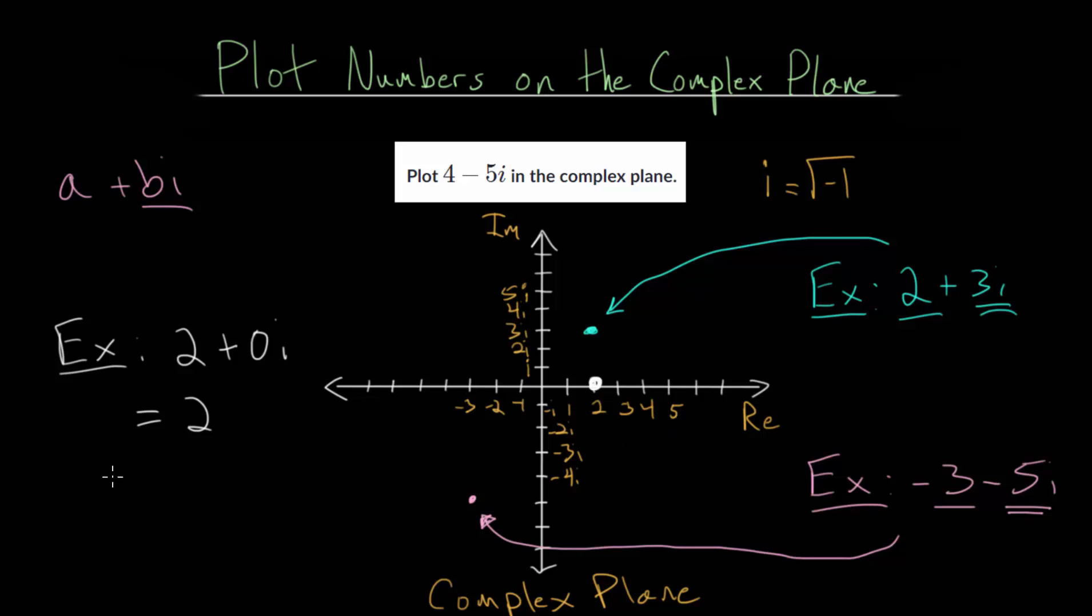Likewise, if we have a purely imaginary number like minus 3i, this number has 0 for its real part. So we won't move left or right when plotting this point. We're just going to go down 3 units in the imaginary direction. So this point will be right here.